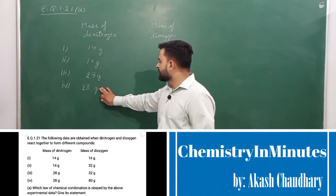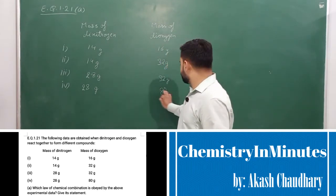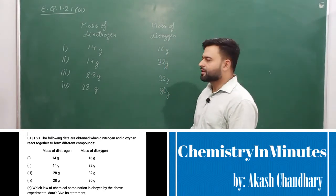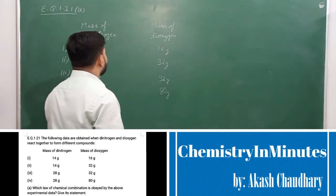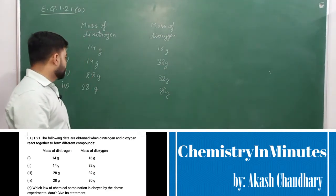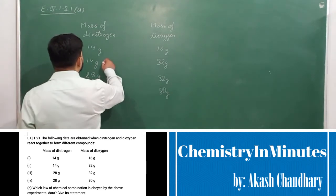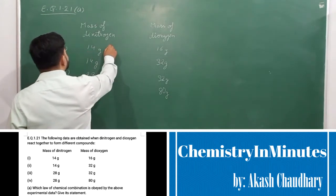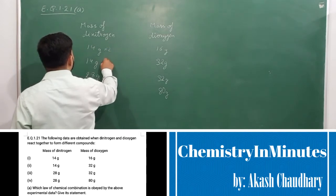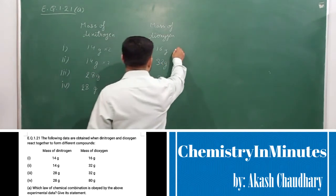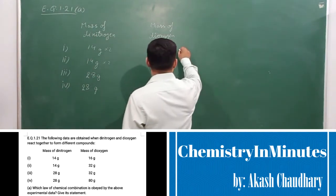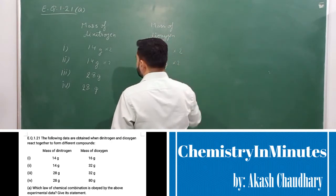Then 28g is reacting with 80g. And if we take mass of dinitrogen to be fixed as 28g, so to make this 28 we have to multiply it by 2, so here also we have to multiply it by 2.